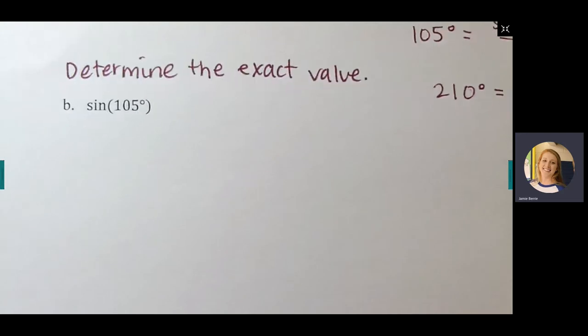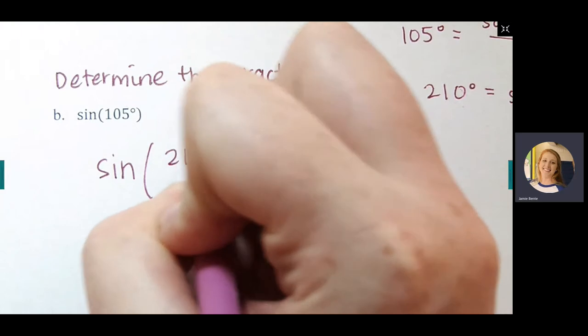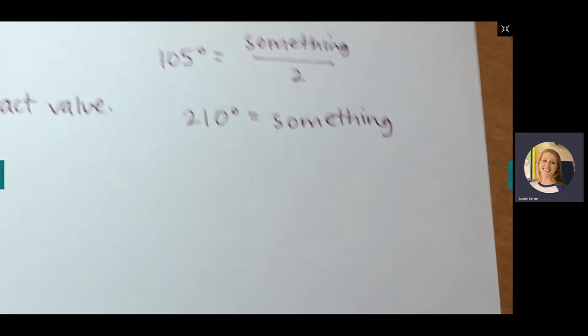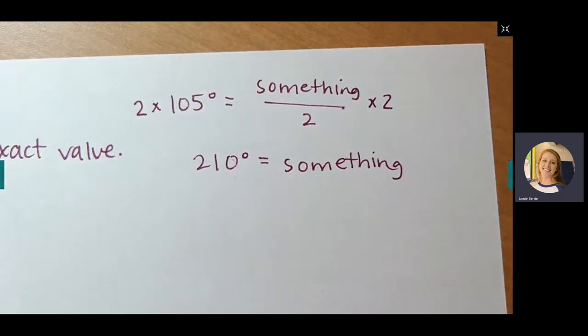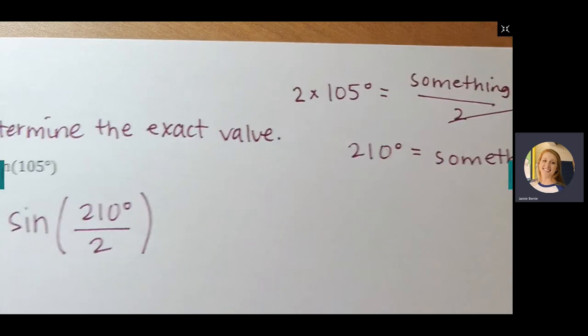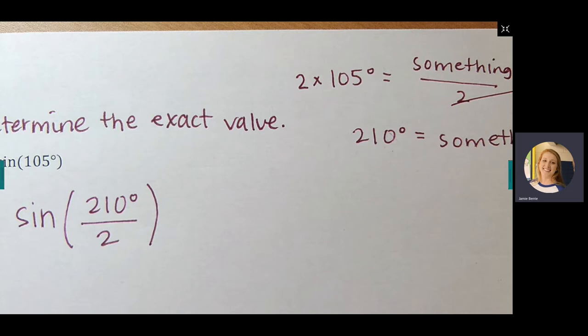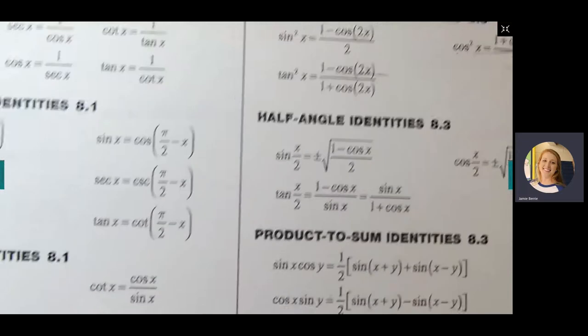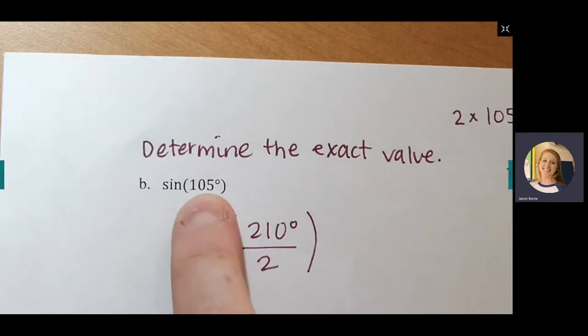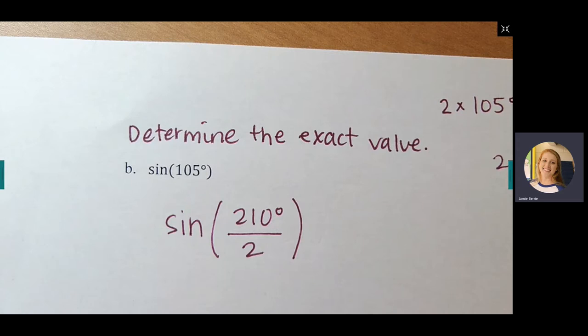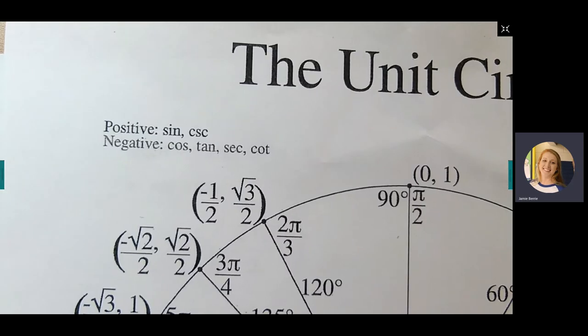So we have sine of 210°/2. Look at the half-angle identity for sine — again we have that plus-or-minus. Go back to the original: 105° is in the second quadrant, and sine is positive in the second quadrant. So we choose the positive version: square root of (1 − cos x)/2, where x is 210.